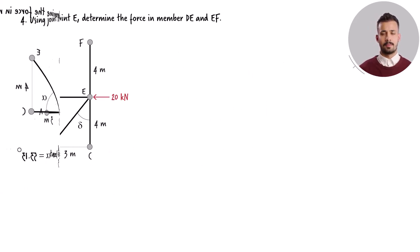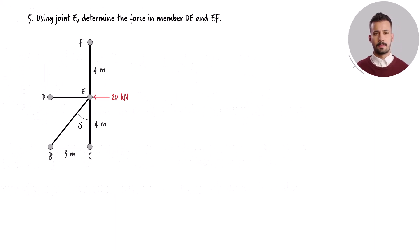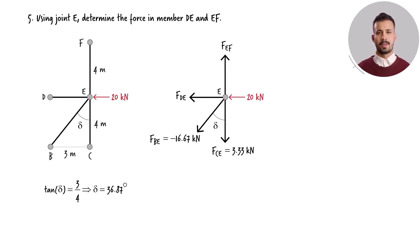Joint E connects four members. The angle between member BE and the vertical axis is 36.87 degrees. We have already determined two of the four forces acting at this joint. So the remaining unknown forces can be calculated using the joint equilibrium equations. Solving these equations for the unknowns, we get the results.